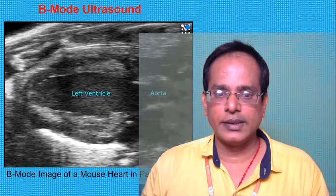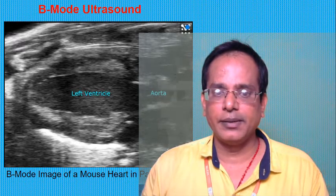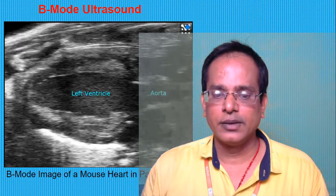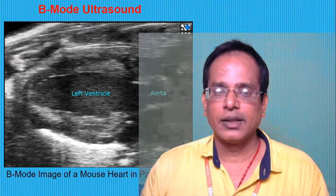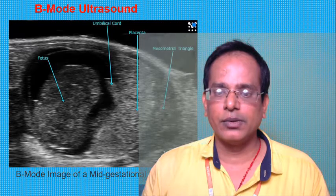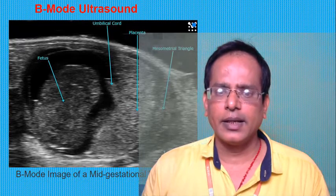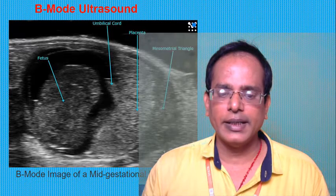Here you can see the left ventricular aorta images taken by B-mode ultrasound, which shows the mouse heart in the parasternal long axis. Another B-mode ultrasound image shows the mesometrial triangle, placenta, umbilical cord, and fetus — that is a B-mode image of a mid-gestational mouse.